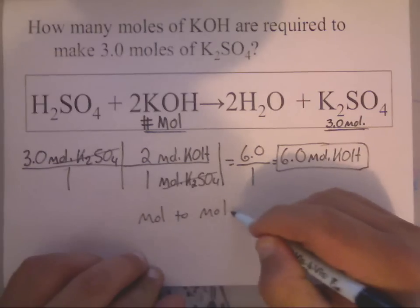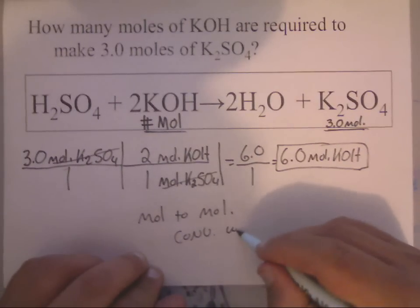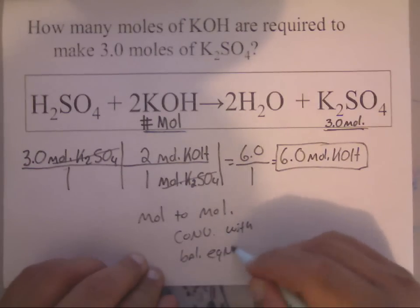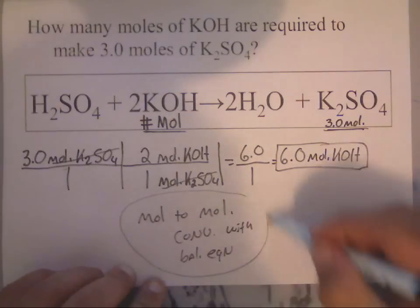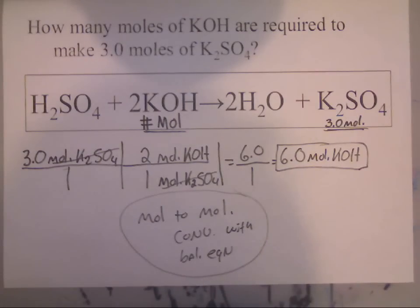Well, mole K₂SO₄ cancels with moles of K₂SO₄. And I'm left with 6 moles of potassium hydroxide. And this is how you do a mole-to-mole conversion with a balanced equation. Alright, guys. I hope this helps.